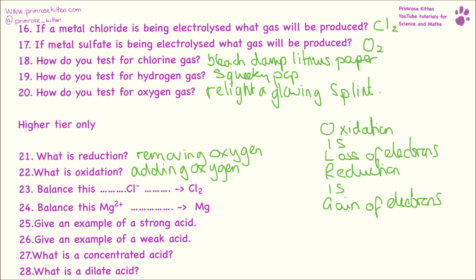Balancing half equations is really important. Not only do you need to balance the atoms, you need to balance the electrons as well. So here we have two chlorines on one side, so we need two chlorines on the other side too. On one side we have a 2⁻ charge and on the other side we have zero charge overall, so we need to remove two negative charges by taking away two electrons: 2⁻ minus 2⁻ equals zero. For magnesium, we have one magnesium on each side — that's already balanced — but we need to add two negative charges because it has a 2⁺ charge, so 2⁺ plus 2⁻ equals zero overall.